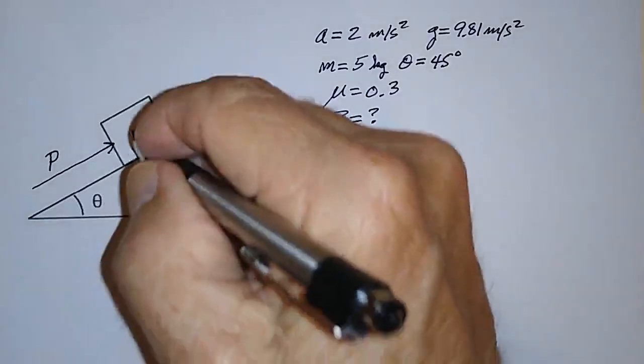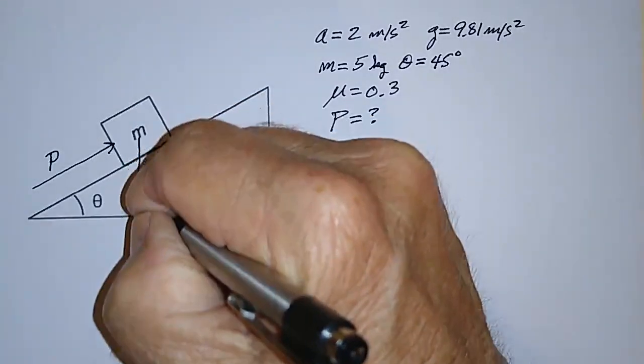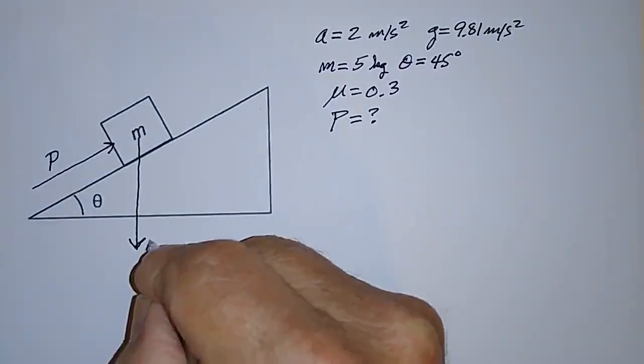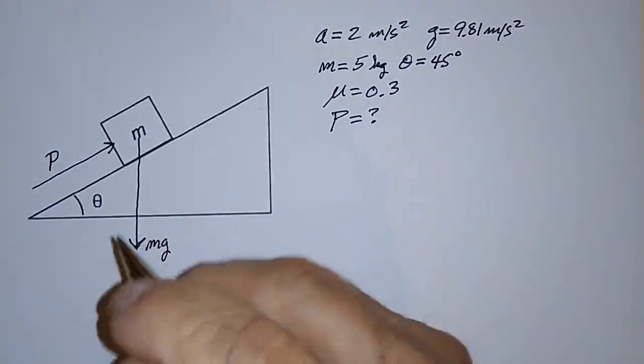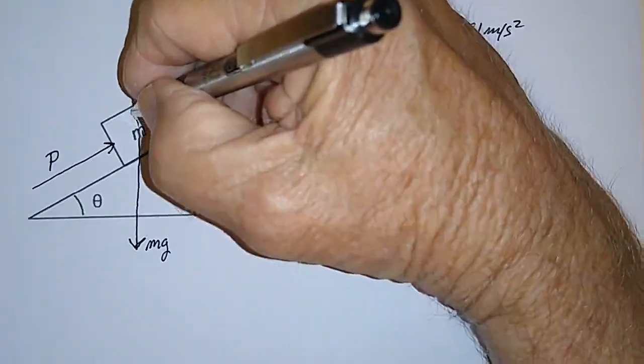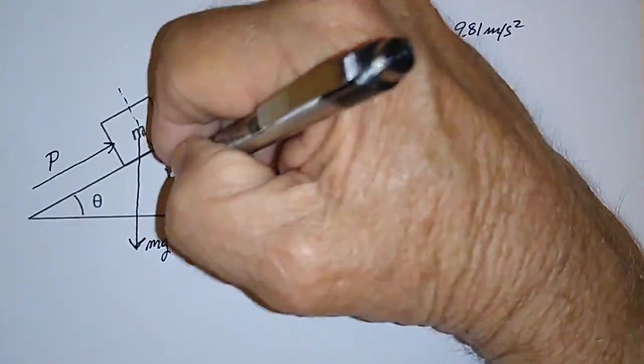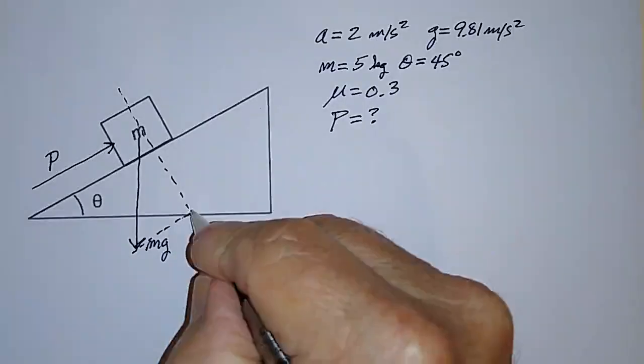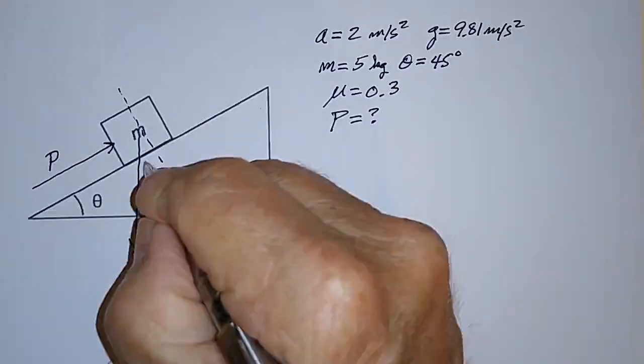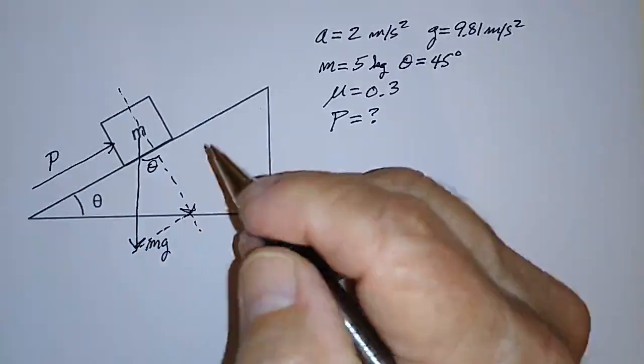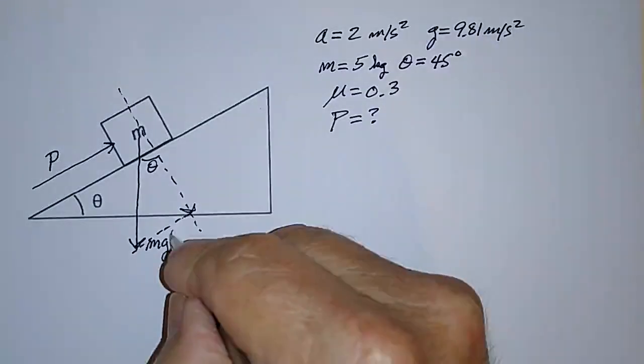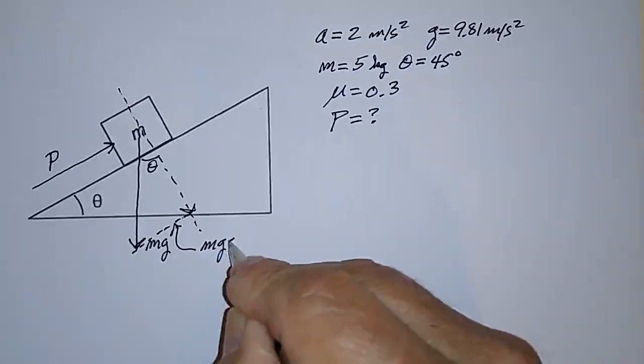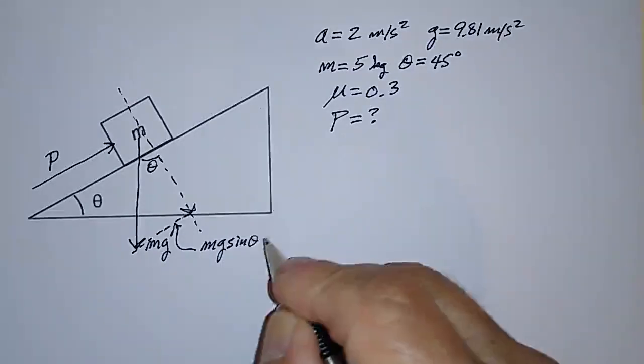So here they are. Force due to gravity is acting down this way, and I'm going to write that as MG. And it has components that are parallel and perpendicular to the ramp. Here's the perpendicular one. This is angle theta also, by the way. That makes the parallel component MG times sine theta.